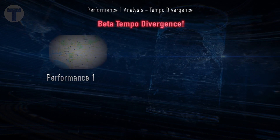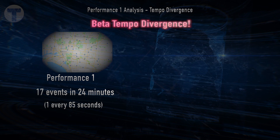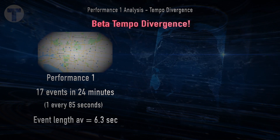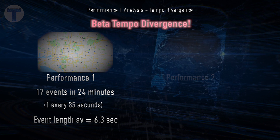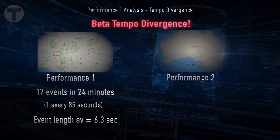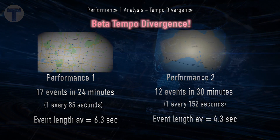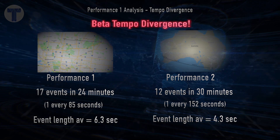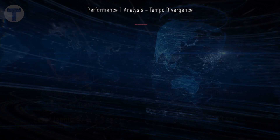To get a clear understanding of tempo divergence, let's look at some stats. Performance 1 had 17 events in 24 minutes — about one every 85 seconds — for an average length of 6.3 seconds. In Performance 2, there were only 12 events in 30 minutes, so one every 152 seconds, and the average length was only 4.3 seconds.